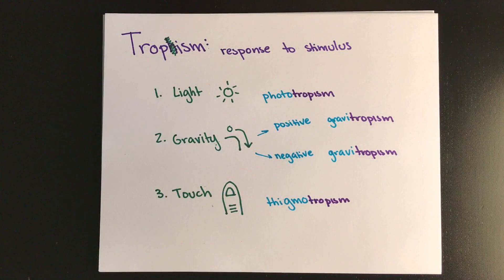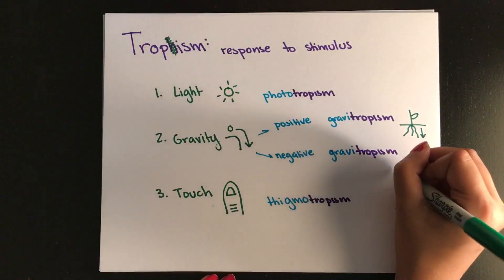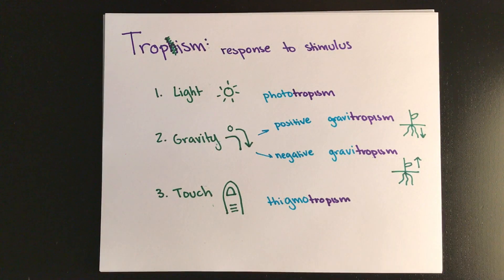When roots grow deeper into the ground, this is known as positive gravitropism. Again, this is gravity pulling down, positive because it's going down. And when plants and leaves grow up, it's called negative gravitropism, negative because it's going against gravity. Gravitropism can also be known as geotropism, just BTW if you see that on the test.